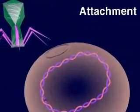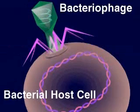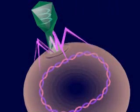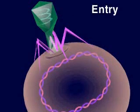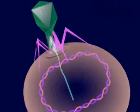A bacteriophage attaches to a bacterial host cell by recognizing and locking onto a specific receptor site on the surface of the host cell. The virus then injects its DNA into the host cell.